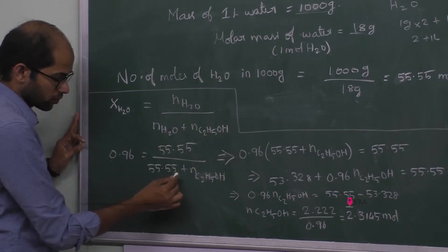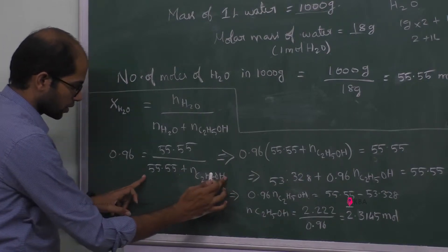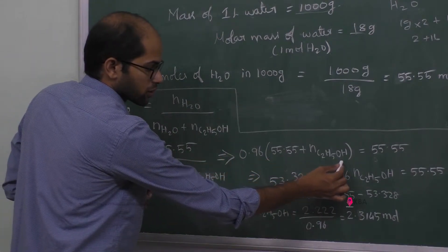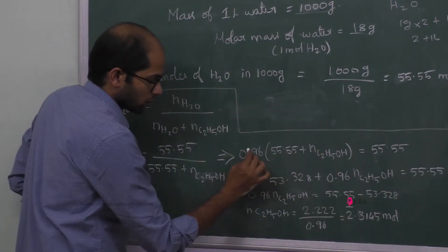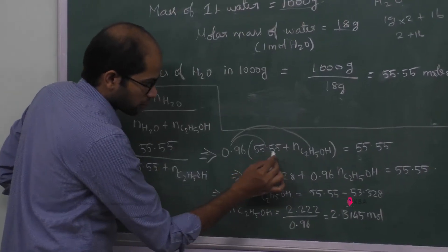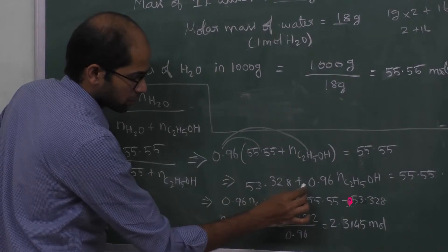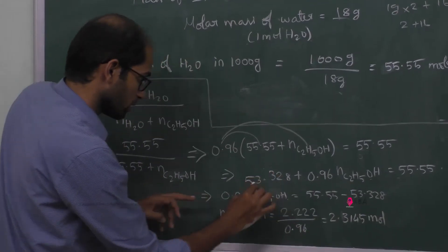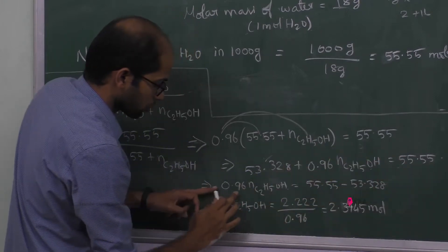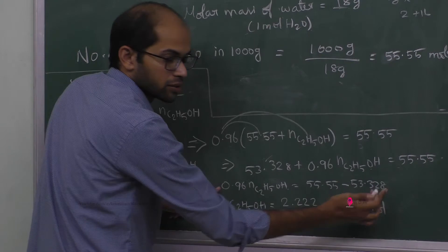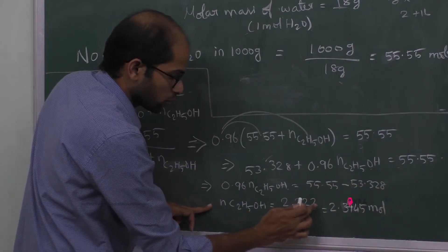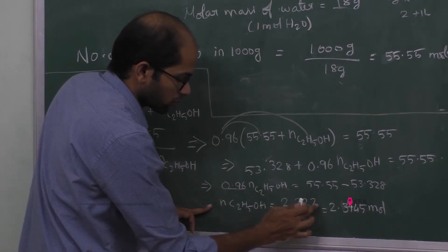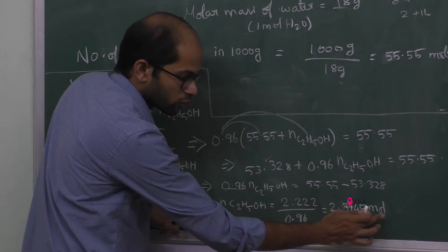Substituting into the mole fraction equation: 0.96 equals 55.55 divided by (55.55 plus number of moles of ethanol). Cross-multiplying: 0.96 × (55.55 + N_ethanol) = 55.55. So, 53.328 + 0.96 × N_ethanol = 55.55. Therefore, 0.96 × N_ethanol = 55.55 minus 53.328 = 2.222. Number of moles of ethanol = 2.222 divided by 0.96 = 2.3145 moles.